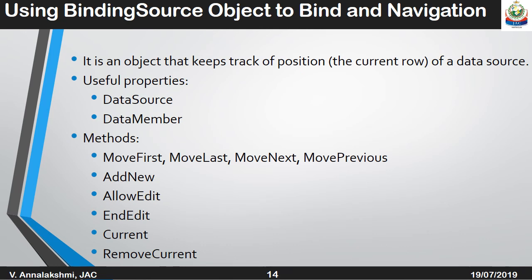Using the binding source object to do the binding and navigation. It is an object that keeps track of position, indicating the current row of the data source. It supports the following properties: data source and data member. The methods include: MoveFirst, MoveLast, MoveNext, MovePrevious, AddNew, AllowEdit, EndEdit, Current, and RemoveCurrent.